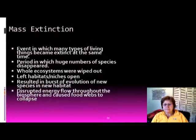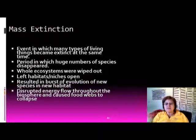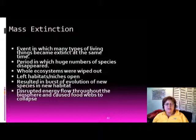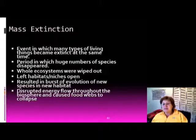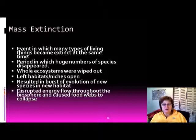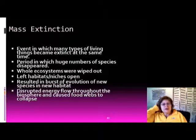Let's start with mass extinction. This is important because there are a whole lot of mass extinctions during Earth's history. Mass extinction is an event when a lot of species go extinct at the same time — whole ecosystems can be wiped out — which leaves a lot of habitats and ecosystems open, usually resulting in a burst of evolution with new species filling in those habitats.